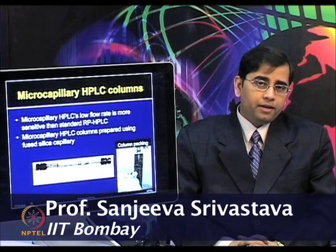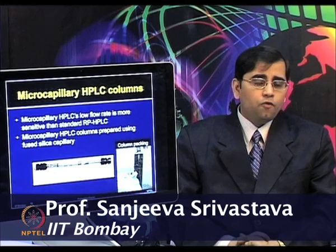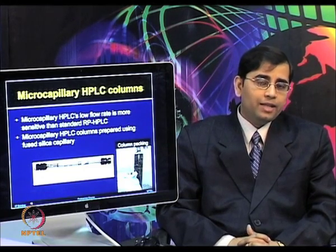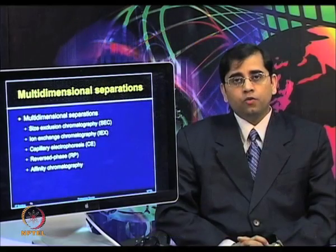HPLC can be micro capillary, nano LC, or different types of chip-based chromatography separation. For proteomics, various types of micro capillary, nano LC, and different chip technologies are currently used. In micro capillary HPLC, the low flow rate — which is less than 1 microliter per minute — is more sensitive compared to standard reverse phase HPLC at around 50 microliters per minute. Micro capillary HPLC is required for analysis of low femtomole amounts of peptides. One can prepare micro capillary HPLCs by using fused silica capillaries packed with reverse phase packing material.